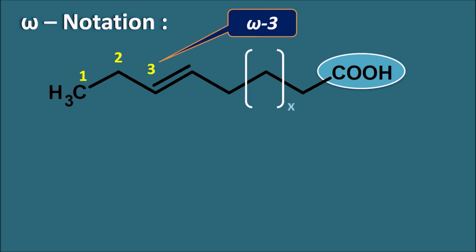If this fatty acid has n number of carbons, it can also be denoted as n-3, meaning the first double bond is present at position n-3. For example, if the fatty acid has 18 carbons, then the first double bond from the other terminal is at position 18 minus 3, which is the 15th position. That is the n-3 notation as well as the omega notation.